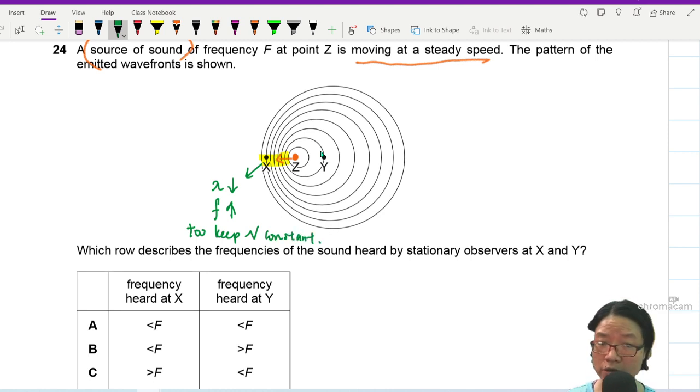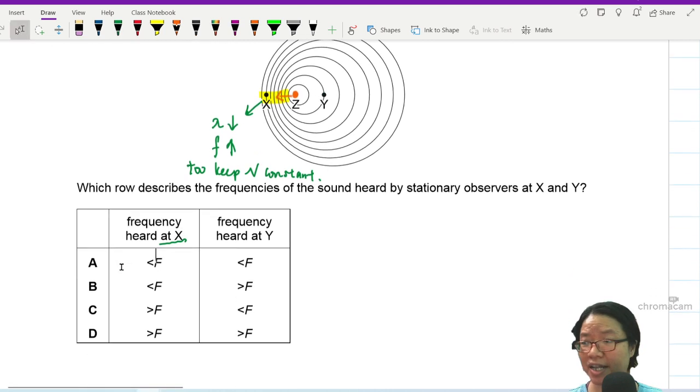We're keeping the speed of sound constant. So here, lambda decrease, frequency increase. Meaning the frequency heard at x must be greater than f.